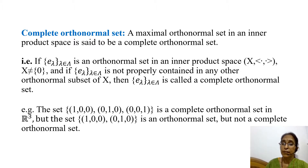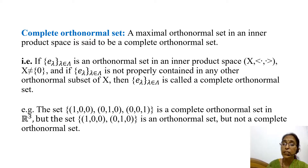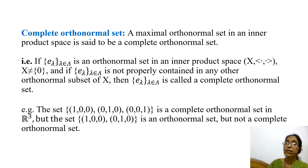That is, if {E_λ : λ ∈ Λ} is an orthonormal set in an inner product space X, where X is a non-zero space, and if it is not properly contained in any other orthonormal subset of X, then this set is called a complete orthonormal set. For example, the set {(1,0,0), (0,1,0), (0,0,1)} is a complete orthonormal set in R³, because any two vectors are orthogonal, the norm of each vector is 1, and we cannot find any larger orthonormal set in R³. So this is a maximal, hence complete, orthonormal set.